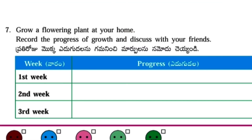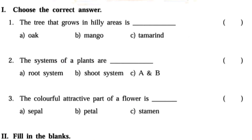Next, grow a flowering plant at your home. Record the progress of growth and discuss with your friends. Here you have to plant a sapling in your home and observe for three weeks. First week: what do you observe? You have to write here. And what do you observe in the second week and third week? You have to write.